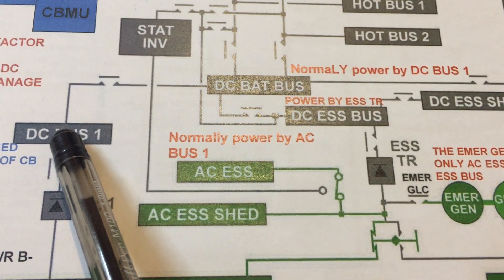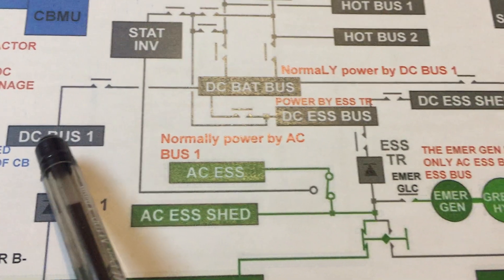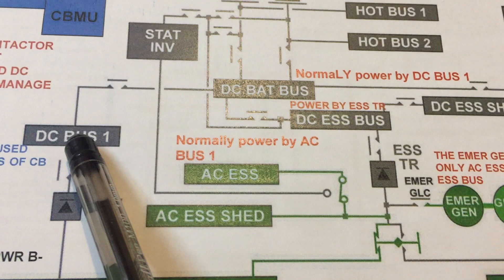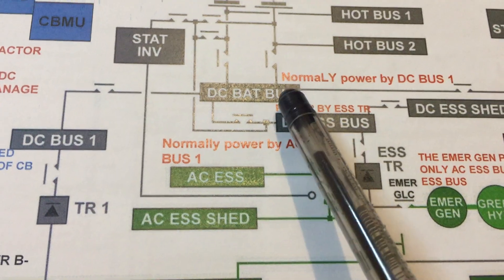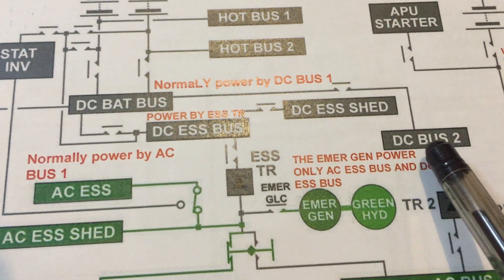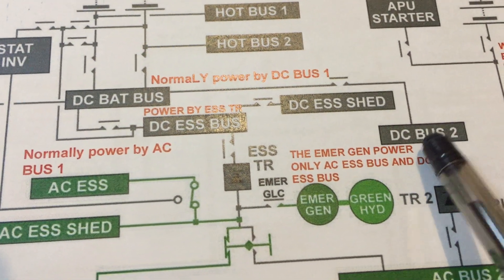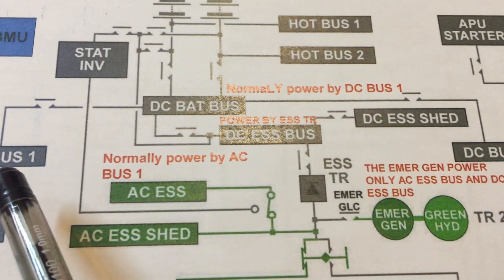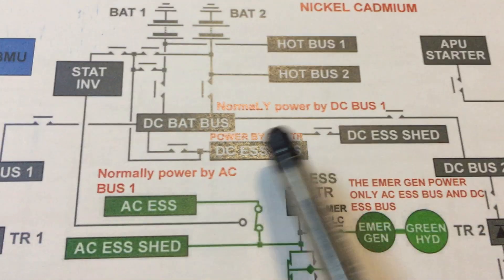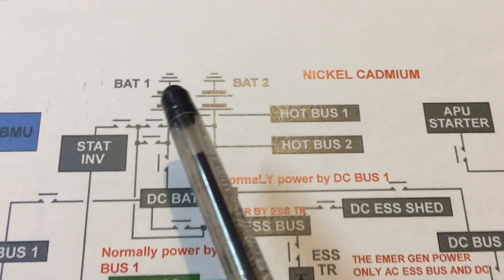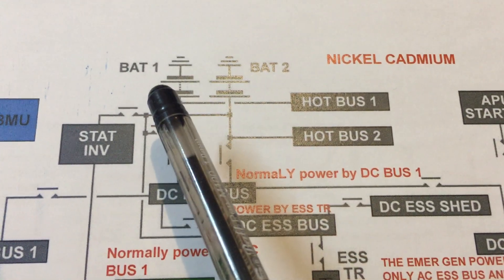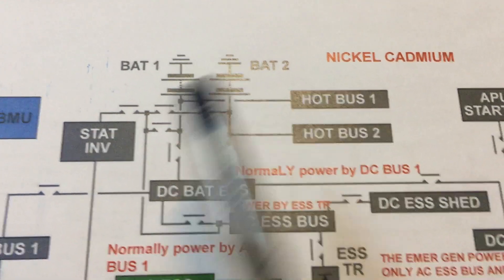We also have the DC battery bus. The DC battery bus is normally powered by DC bus number one. If for any reason we lose DC bus number one, the DC battery bus can be powered by DC bus number two. If we lose both DC bus number one and DC bus number two, the DC battery bus can still be powered by battery number one or battery number two.